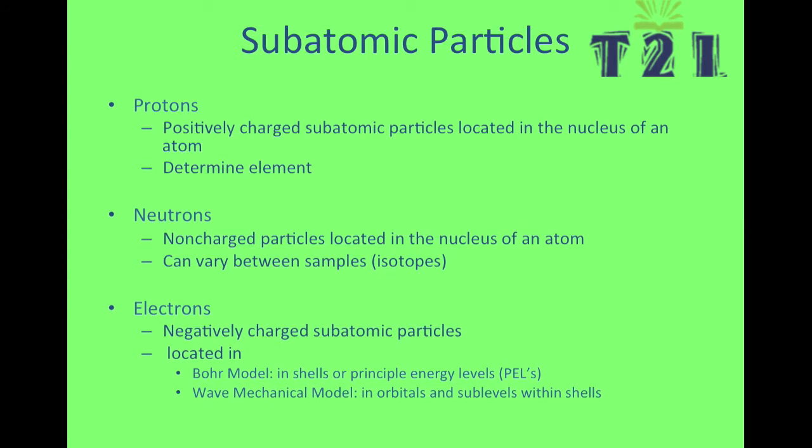There are three major subatomic particles. One is the proton. The proton is a positively charged subatomic particle located in the nucleus. And the number of protons determines the element. Neutrons are not charged and they can vary between elements. And those are called isotopes.